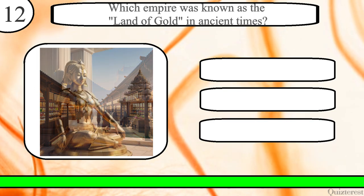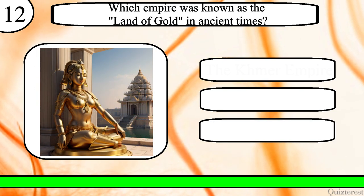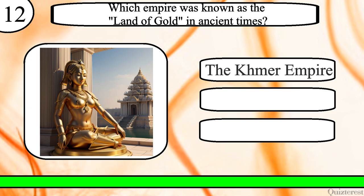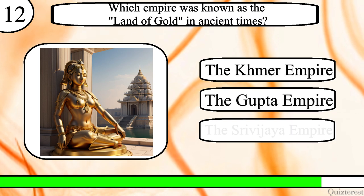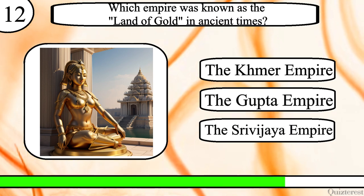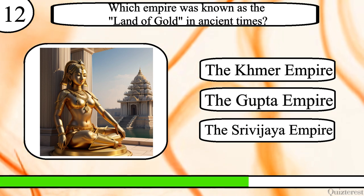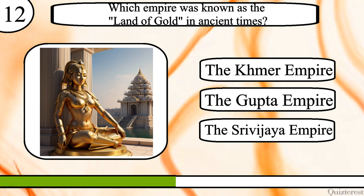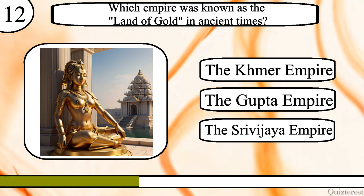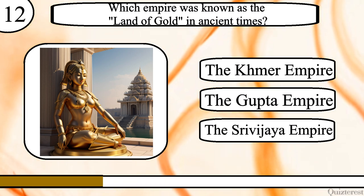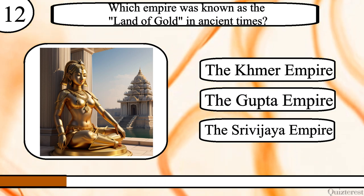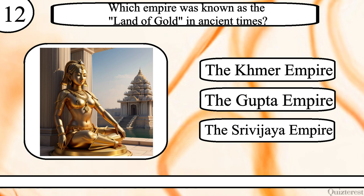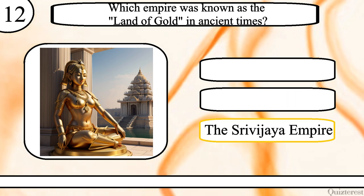Question 12. Which empire was known as the Land of Gold in ancient times? The Khmer Empire, the Gupta Empire or the Srivijaya Empire? The correct answer is the Srivijaya Empire.